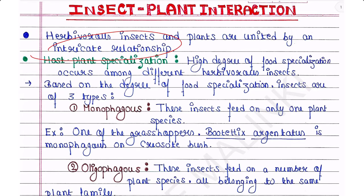Herbivorous insects and plants are united by an intricate relationship. The first topic is host plant specialization. Under this, a high degree of food specialization occurs among different herbivorous insects. Based on the degree of food specialization, insects are of three types.